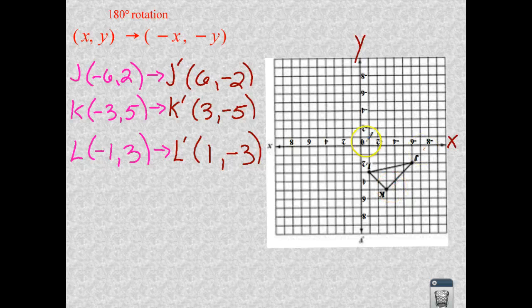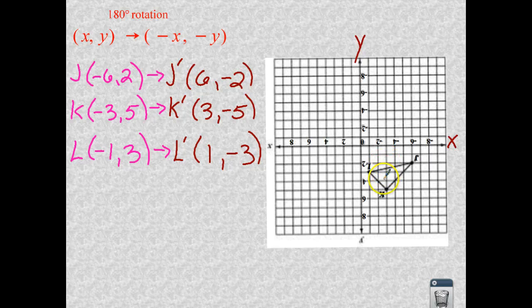And then your k is at 1, 2, 3, positive. And then 1, 2, 3, 4, negative 5. So 3. Oh, look at that. 3, negative 5. And it worked.